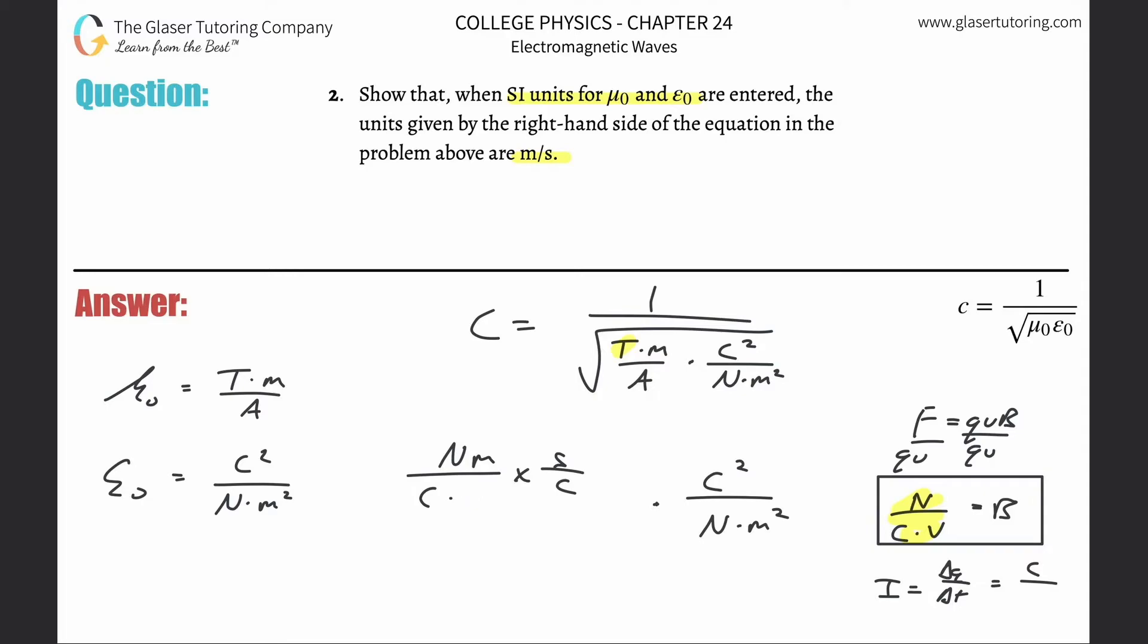We start noticing that if I start combining this stuff—maybe I'll expand on the velocity now. So velocity here is going to be meters per second. Since this is in the denominator, maybe what I'm going to do is flip this, so if I flip it, it's going to be meter here on the bottom and seconds on the top. Now we can start combining some stuff.